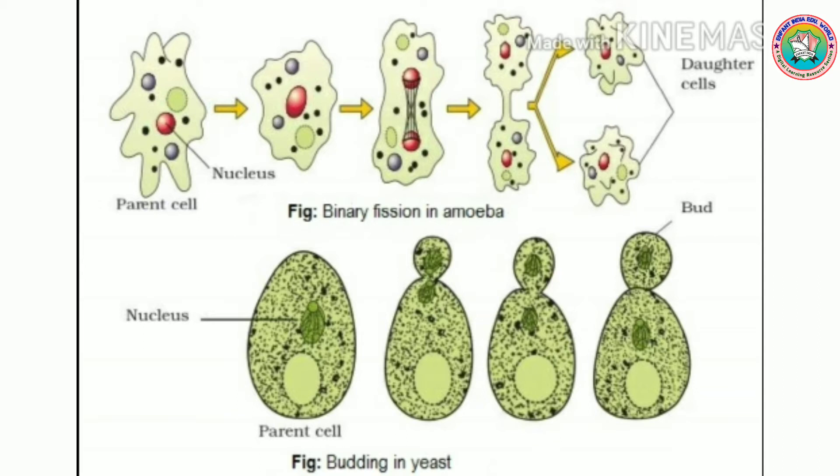We will take an example of amoeba, which divides into two parts. This is known as binary fission. It is carried out when favorable conditions are present. If there is no favorable condition, then amoeba divides by multiple fission.